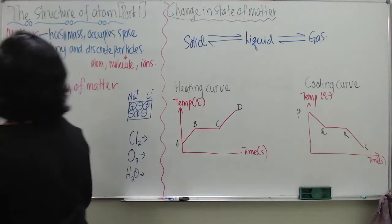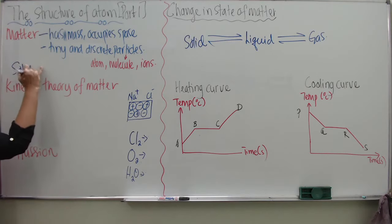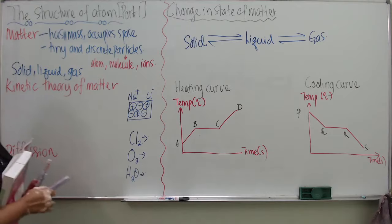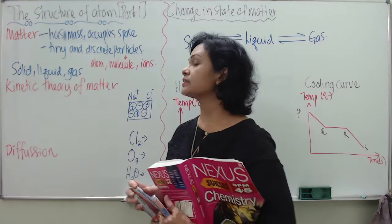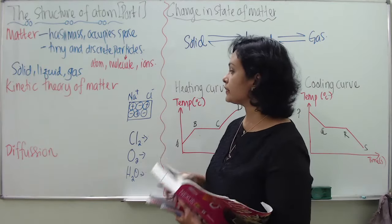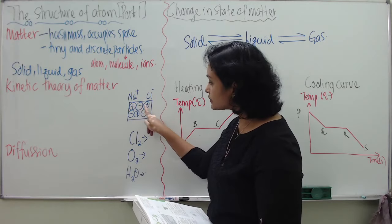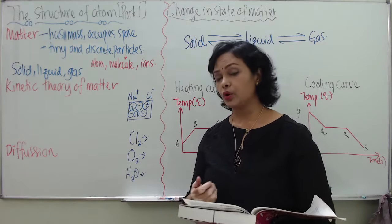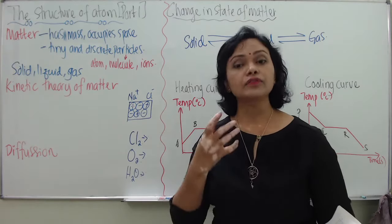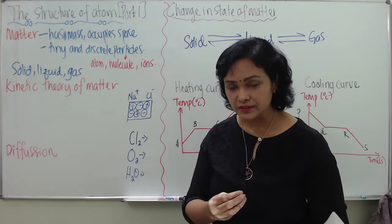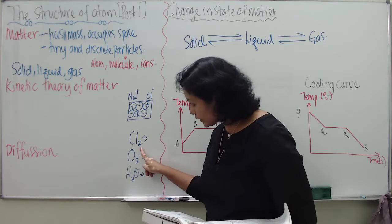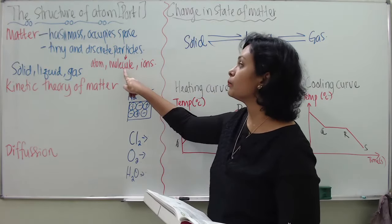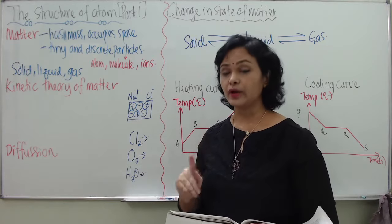Now let's look at the three states of matter: solid, liquid, and gas. I want students to understand the difference between particles and state of matter. For instance, sodium chloride in solid form consists of ions. Chlorine is in the form of gas and consists of molecules. So this is what I want students to understand.